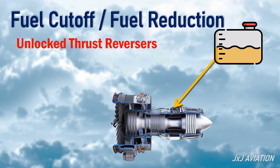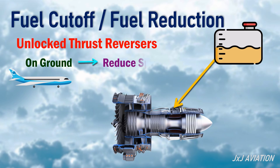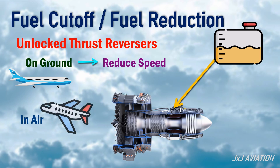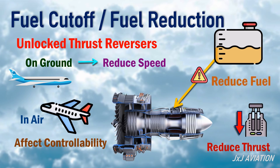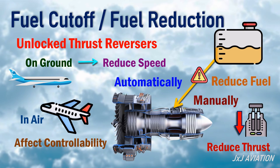Unlocked Thrust Reversers. The thrust reversers are used on ground after an aircraft lands to reduce the speed of the aircraft. If the thrust reversers get deployed in air, it will affect the controllability of the aircraft. The thrust must be reduced on the engine by reducing the fuel flow to the engine. This may be done automatically or manually.